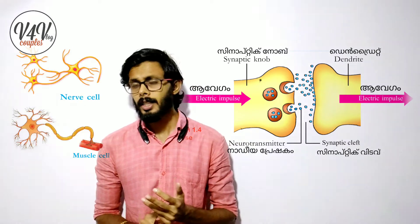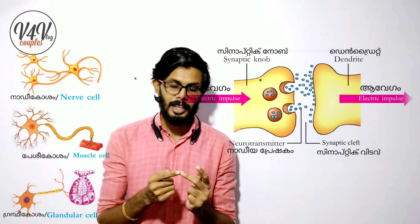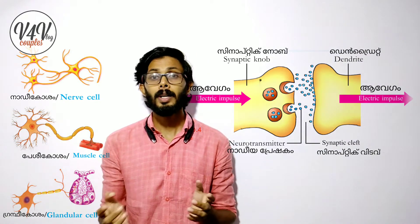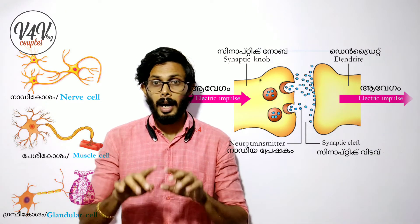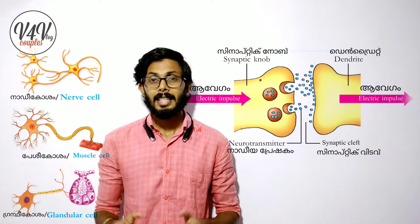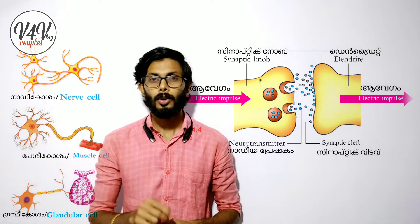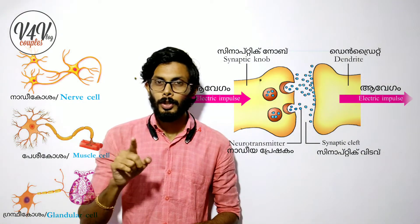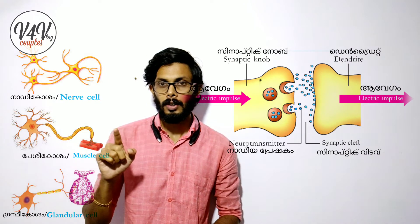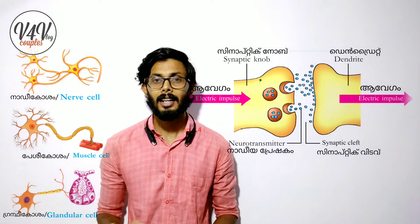There is a neuron. One neuron is something — a junction in between two neurons, or a neuron and muscle cell, or a neuron and gland — is called synapse.